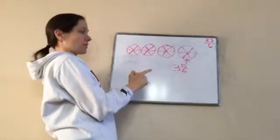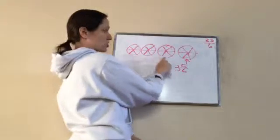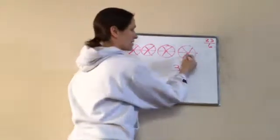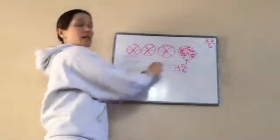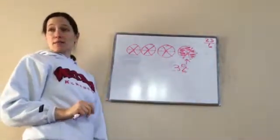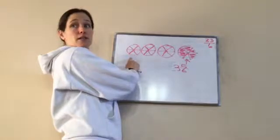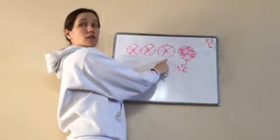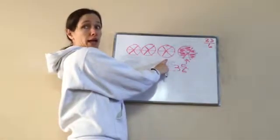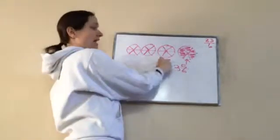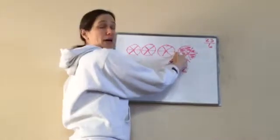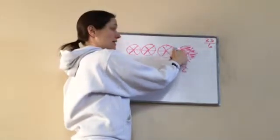Yeah, almost, because this is 3 full pies and then this one is 5/6. So how many full pies do I have? How many pieces in it? 6. So 6 plus 6, that's 12, 13, or 18. So 6 times 3.